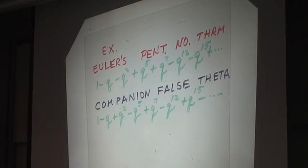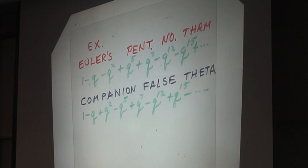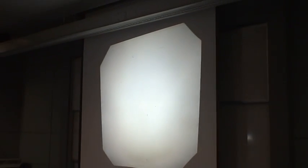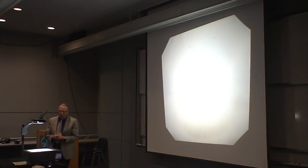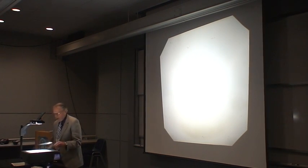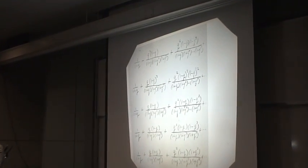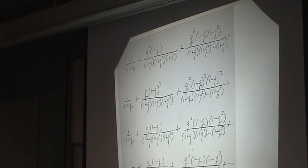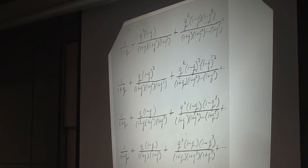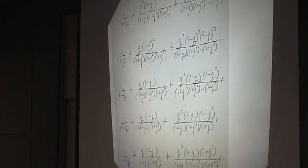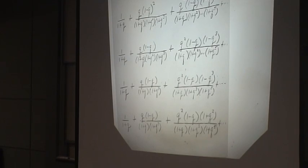To be fair to Ramanujan, in his lost notebook he gives a number of formulas for the false theta series. Let me put on the screen five series that appear in this same order on one page of Ramanujan's lost notebook. You can see that these don't change all that much from line to line. You have to look carefully to see what the difference is. Each line is different from the others.